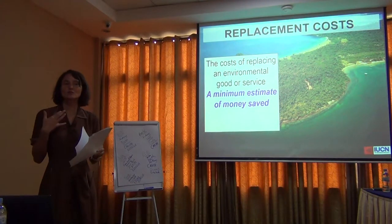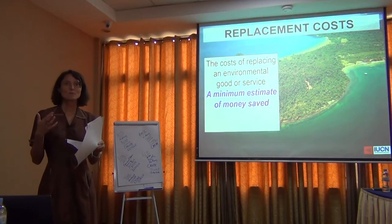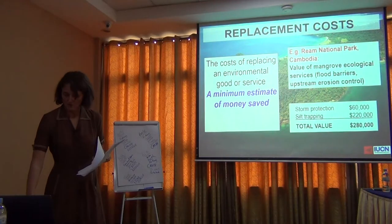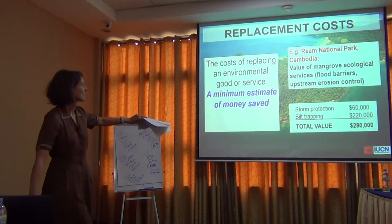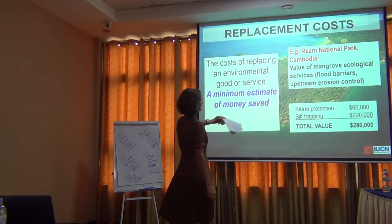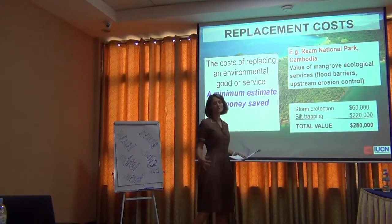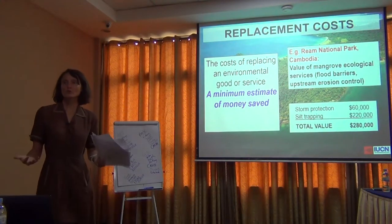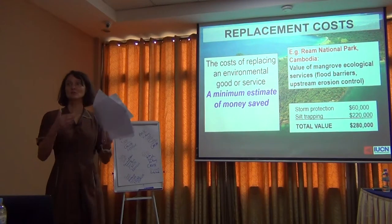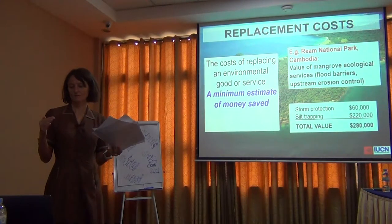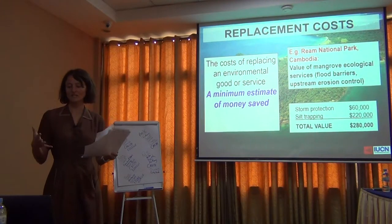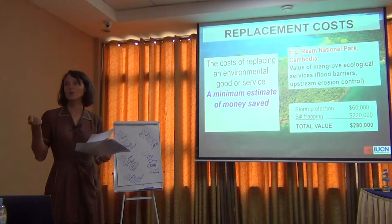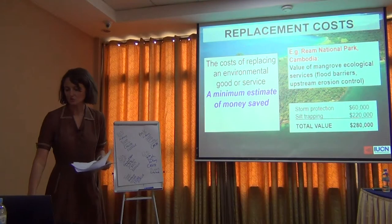There's no way to account for the beauty of the landscape or anything like that, obviously. There was an example in Cambodia in a national park where that tract of land was helping with storm protection and silt trapping — both of which are things we can build barriers and systems for, and we know how much that would cost. So then you say, that's the value of that ecosystem service.